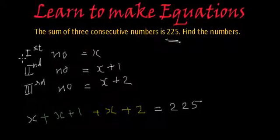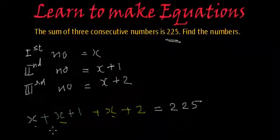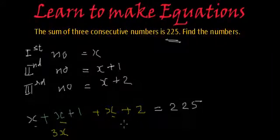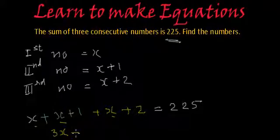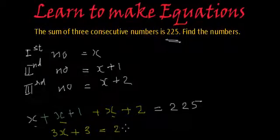We have to add all the like terms. So here we have 1, 2, and 3 x's added to each other. So we will have 3x, and 1 plus 2 is 3, so 3x plus 3 is equal to 225.